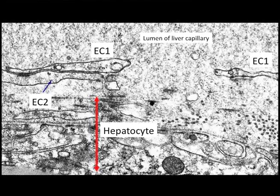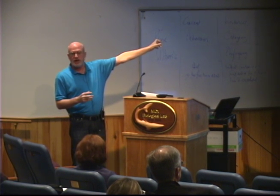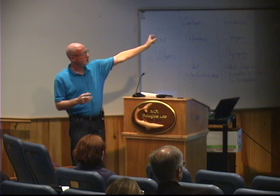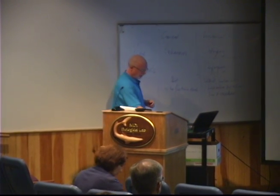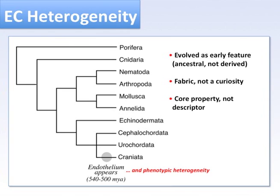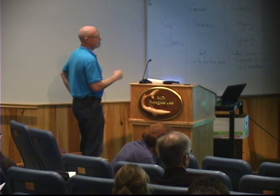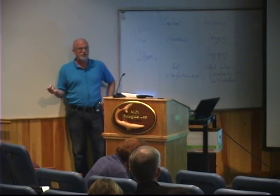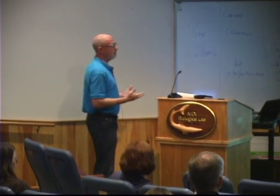As a final example, the hagfish liver: an hepatocyte at the bottom, the lumen of the capillary at the top, one endothelial cell looking normal — but endothelial cell one has a huge gap through which you could drive a truck. Multiple sections of the liver show very easy communication between the blood vessel lumen and the underlying hepatocyte. This tells us not only that endothelium evolved in the ancestral vertebrate, but that endothelial heterogeneity as a biological trait also evolved from the very beginning — it is not an evolutionary add-on or intellectual curiosity but part of the very fabric of the endothelium.